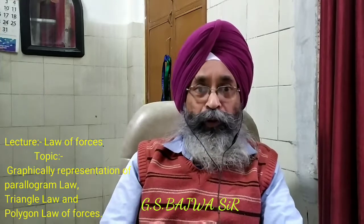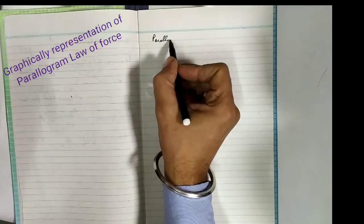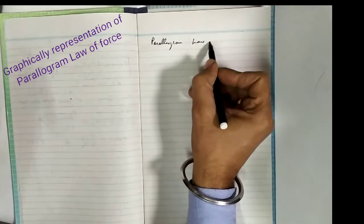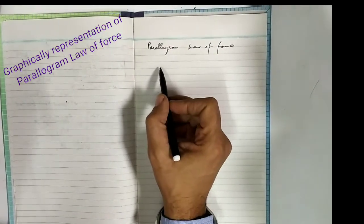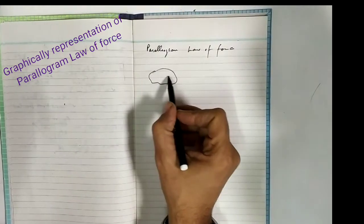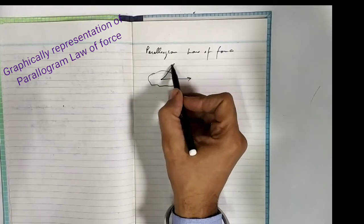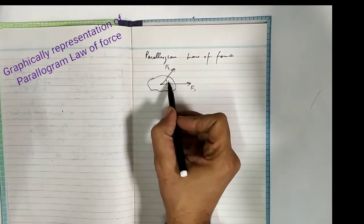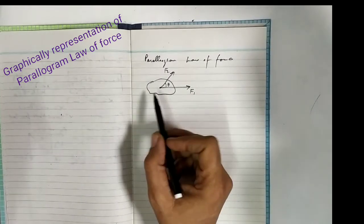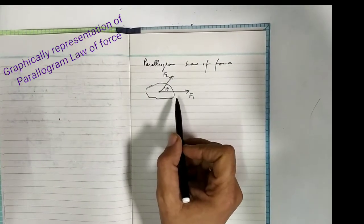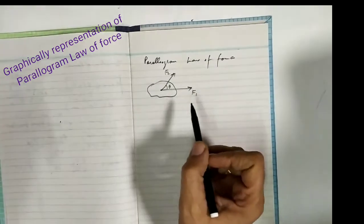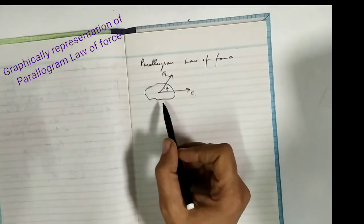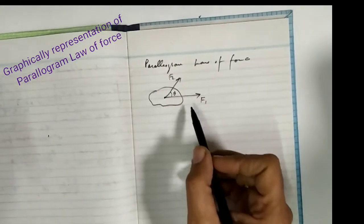Now I will explain all three laws on paper for more clarification. Let's discuss the parallelogram law of forces. If two coplanar concurrent forces are acting on a body — let's say F1 in one direction and F2 in another direction, acting at an angle theta — we want to find out the resultant using the law of parallelogram, both graphically and analytically.